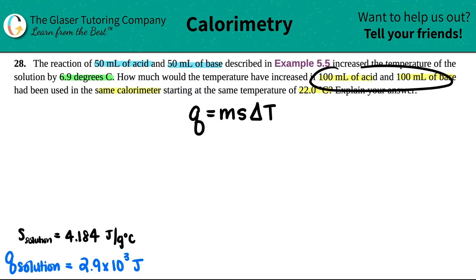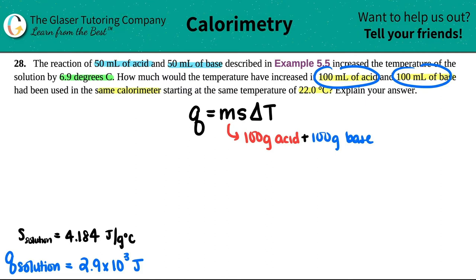We're going to do the same thing here as well. So in this case, the mass would be 100 grams of the acid plus the 100 mL of the base, or in this case it would be grams of the base. Once again, we are assuming that the density would be 1 gram per mL. So whatever the amount of mL that we have is the same amount of grams that we have.